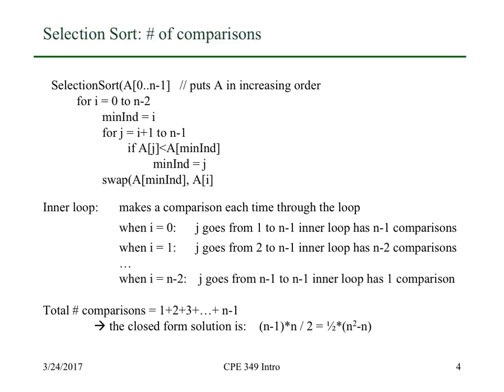Here we just have written down carefully what we just went through. When i equals zero, n minus one comparisons. i equals one, n minus two, all the way down to when i equals n minus two, then j goes from n minus one to n minus one, and there's one comparison.